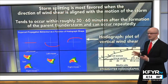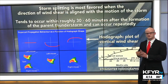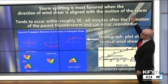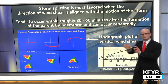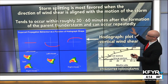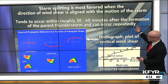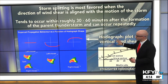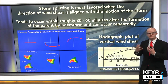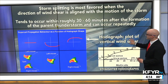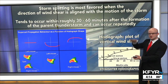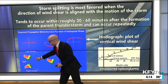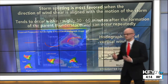Supercell splitting is a pretty interesting and rare phenomenon where storms essentially clone themselves into two separate storms. It's most favored when the direction of wind shear is aligned with the motion the storm is traveling. It tends to occur roughly 30 to 60 minutes after the formation of the parent thunderstorm, and it can occur repeatedly. The tool we use to dissect these storms and assess splitting potential is called a hodograph — a plot of vertical wind shear in the atmosphere. The straighter the hodograph plot, the higher the potential for splitting thunderstorms.